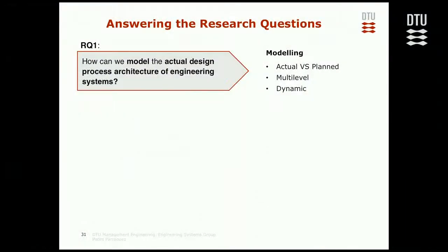Now, the question is: did we answer the research questions? The first research question was about modeling. What I offered was a perspective that looks into the actual and planned process and allows us to compare and explicitly separate them — which is not always done. It's a perspective that is multi-level, with architecture at the level of activities, interfaces, and the whole process, and that is dynamic, at least at the whole process level, so we can see the evolution of patterns.